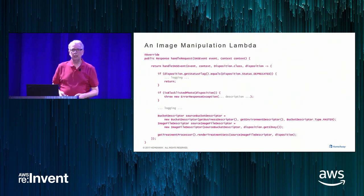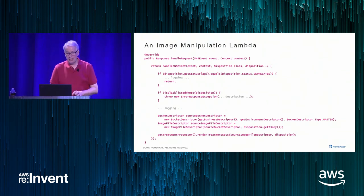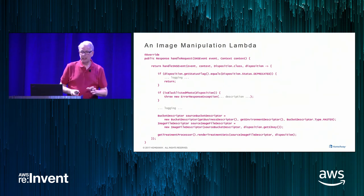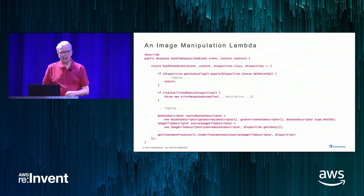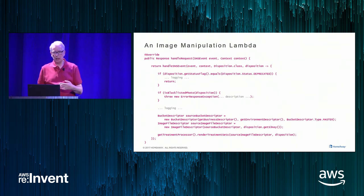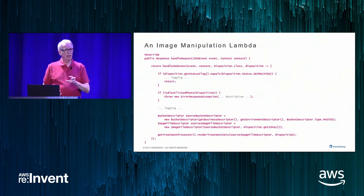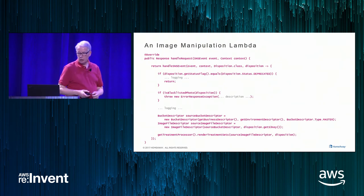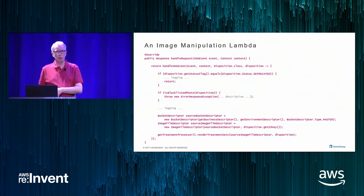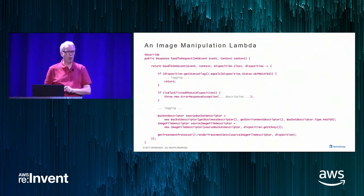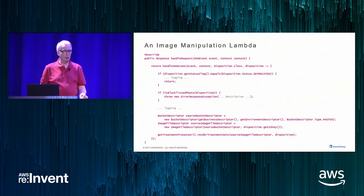This Lambda — one of our Otis Lambdas — takes about two and a half to three seconds to run, so the 100 millisecond rounding is just a rounding error. It responds to an SNS message; the last line calling 'get treatment processor, render treatment sets' is where the bulk of the code is. It's a Java Lambda using a shared library. Three Lambdas in our system use the same library — you can write them like Lego bricks that you then plug together.